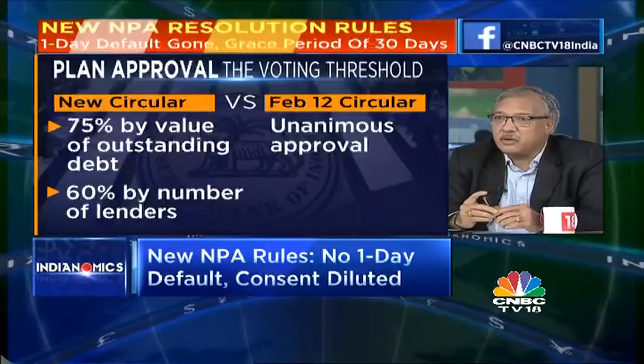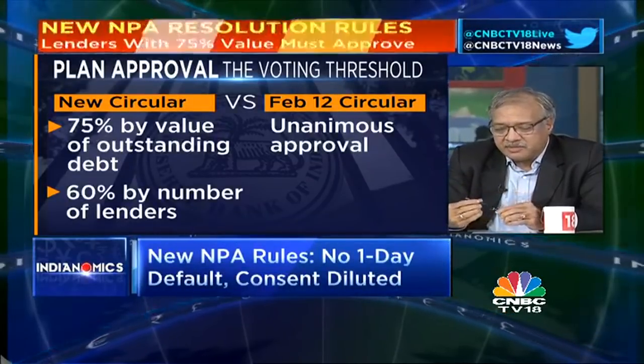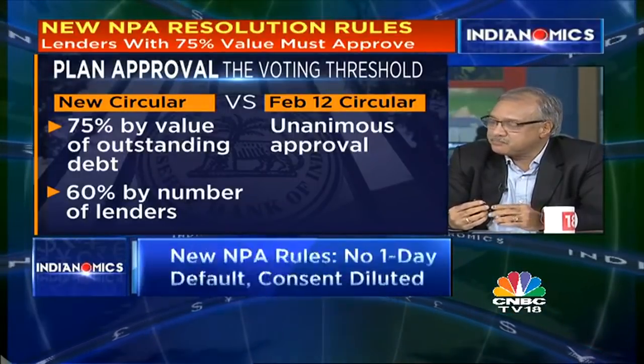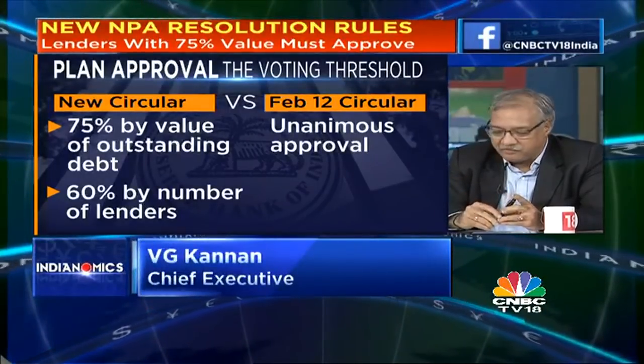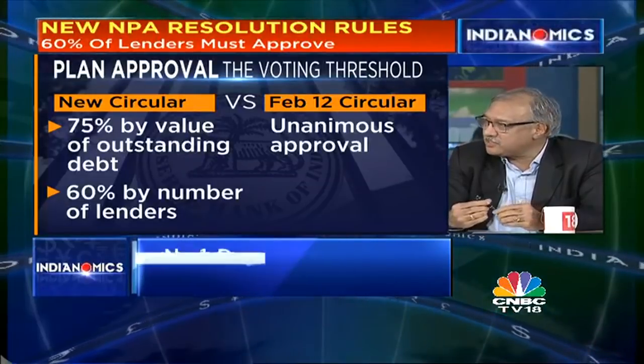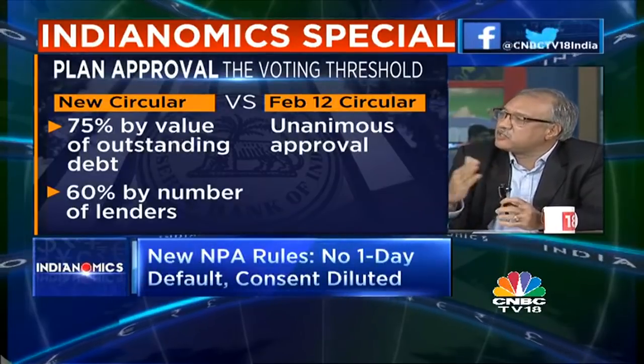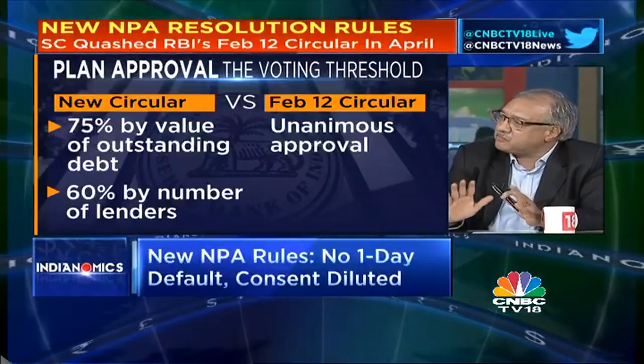The earlier ICA had a stipulation of something like 66% of those who are signatories. Now, as per the RBI circular of June 7, it is mandatory for those starting a resolution to have an inter-creditor agreement entered into. We are planning to amend the ICA to include these provisions. Rather than having everyone re-sign entirely, we may add one or two clauses and ask additional members to sign those specific clauses, as most provisions of the ICA remain the same.